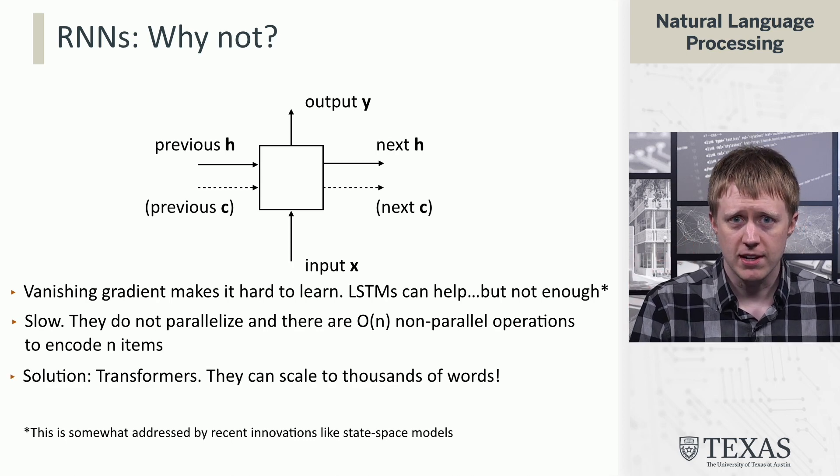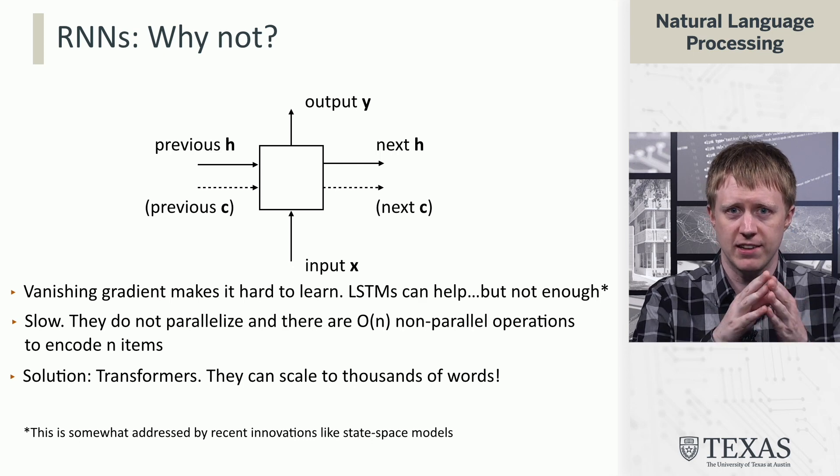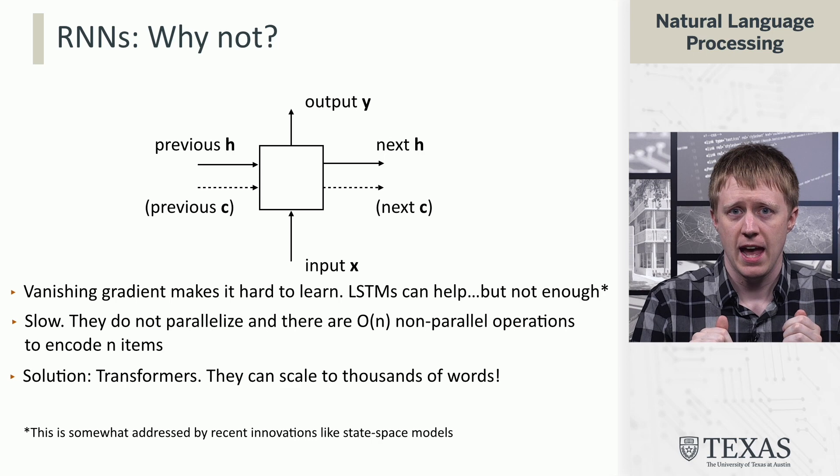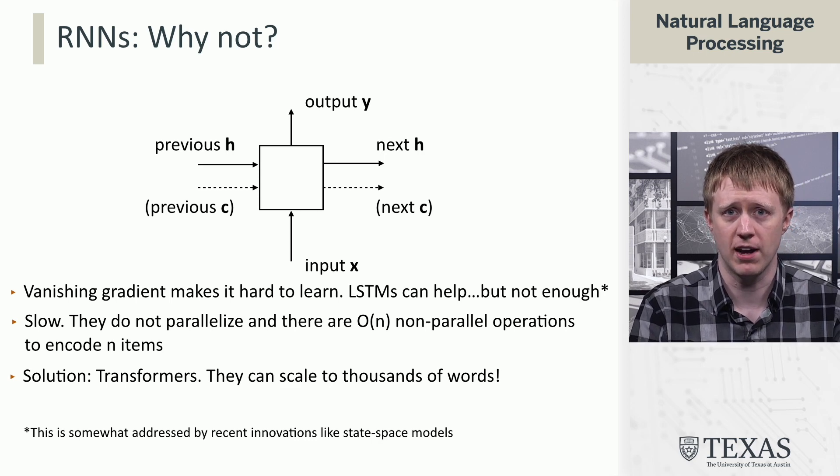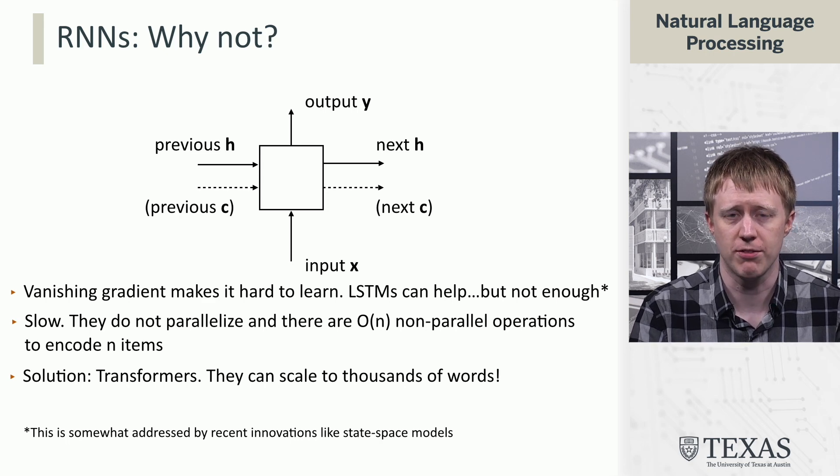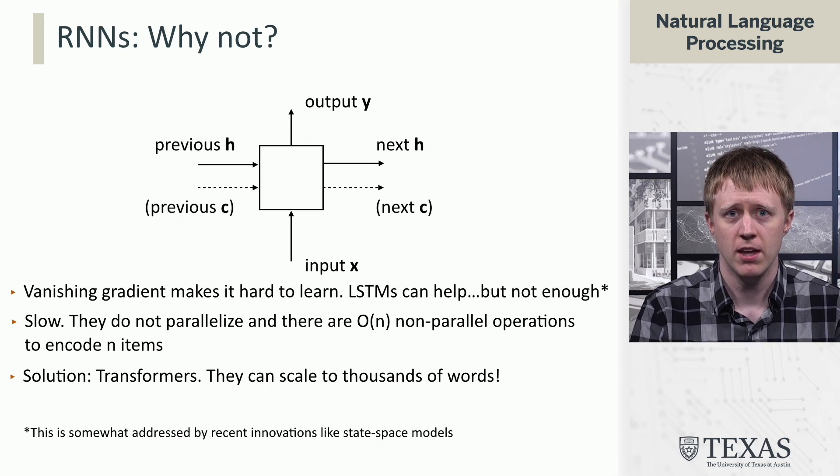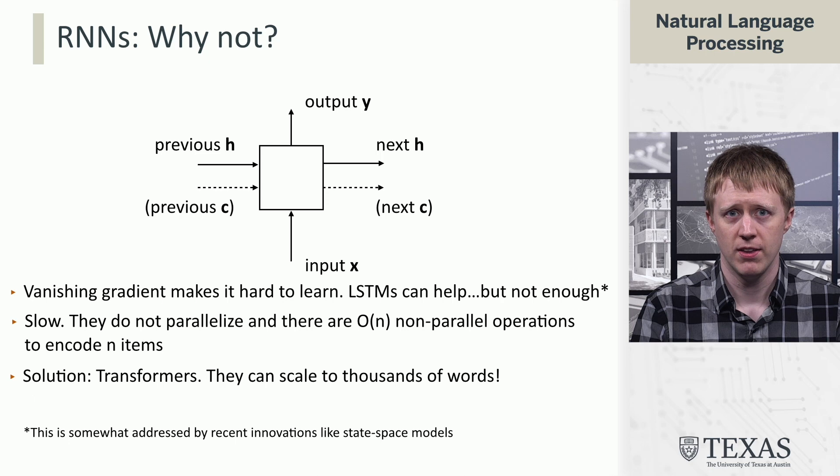What we're going to see is that transformers solve both of these problems. They index into the context very effectively and they also parallelize very effectively. So we're not going to have these long sequential chains in our computation graph that are going to cause things to be slow. We're going to put RNNs to bed here and turn our attention to transformers for the rest of this course.